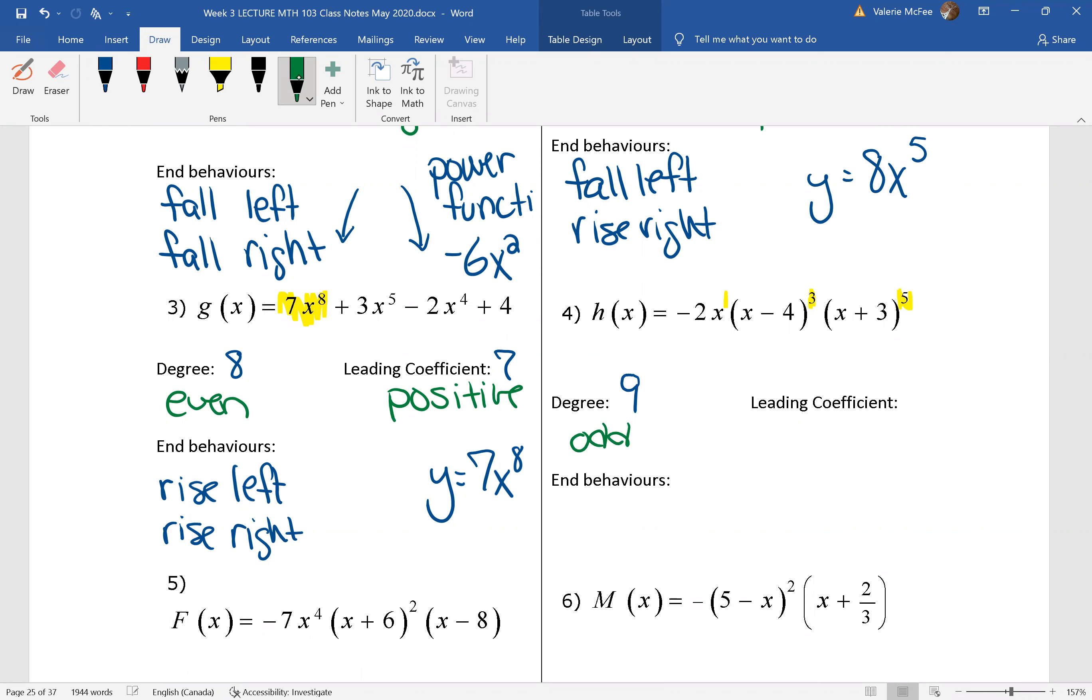It has a leading coefficient of -2, multiplying 1x³, multiplying 1x⁵. So my leading coefficient is -2, negative.